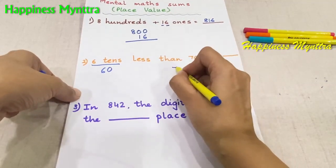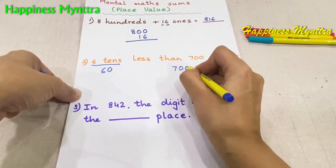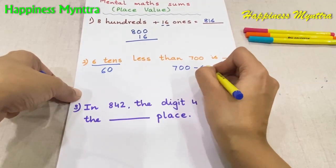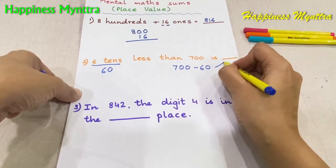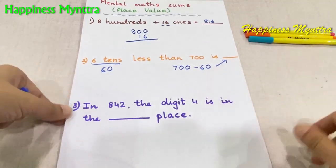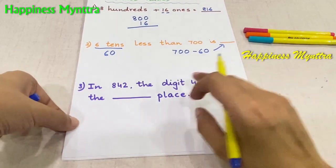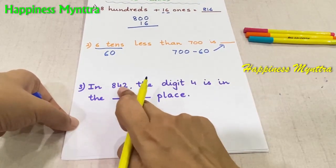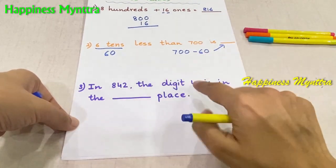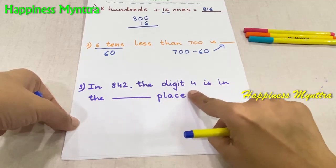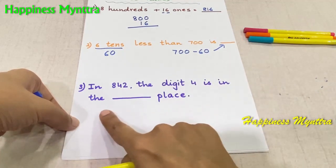Right — six tens less than 700. Six tens is 60, so it is going to be 700 minus 60, which gives them the answer 640.